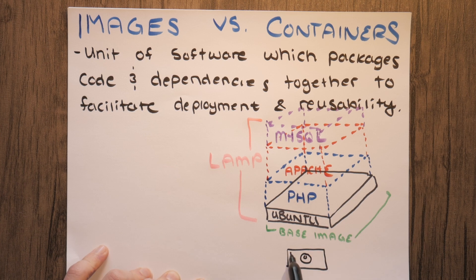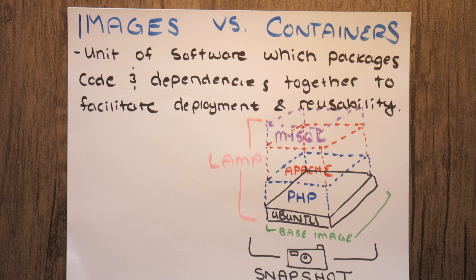It's important to note that when we download these base images like Ubuntu, we are not downloading the entire operating system that you would see on a standard hypervisor. What we are doing is essentially installing a file system snapshot of the Ubuntu OS. We don't have all of the standard device drivers you'd see in a full blown installation — this is typically the bare minimum requirements needed to get our application up and running.